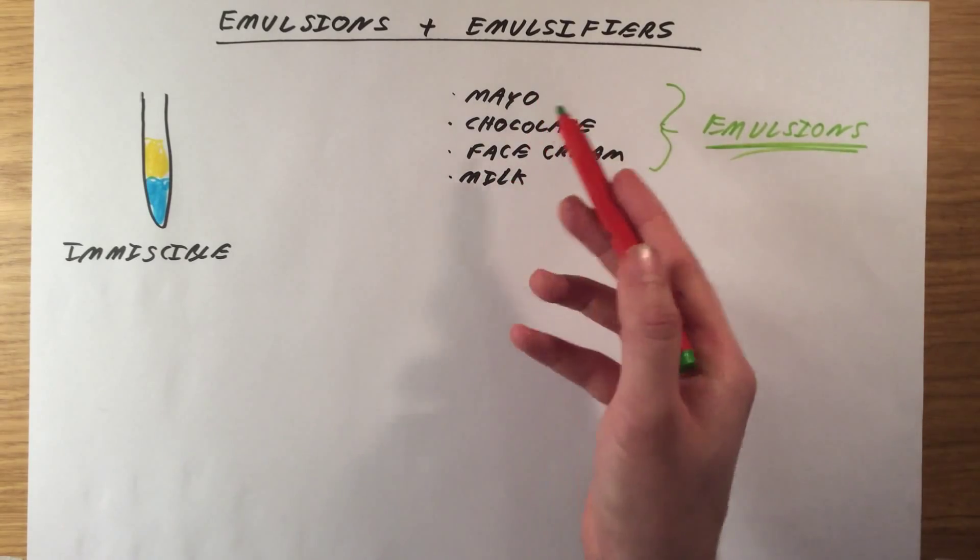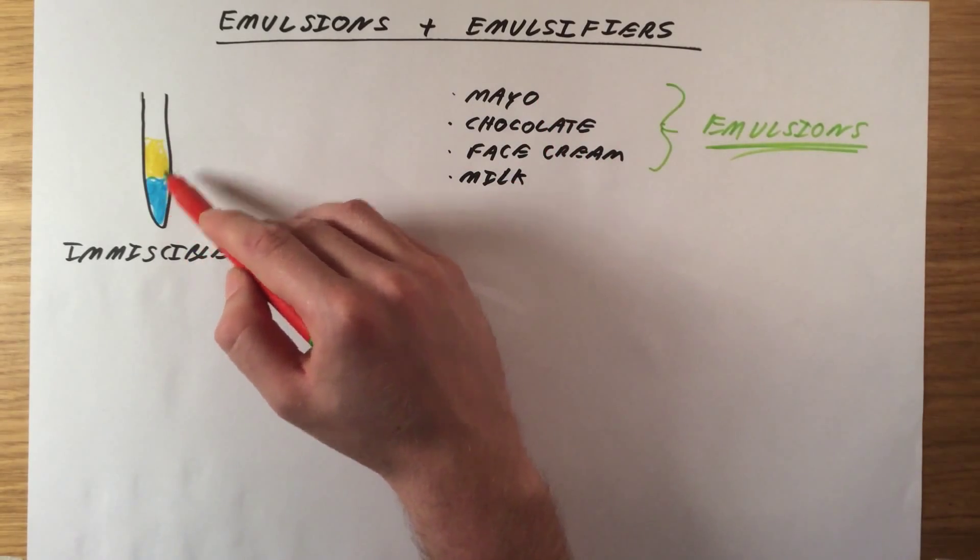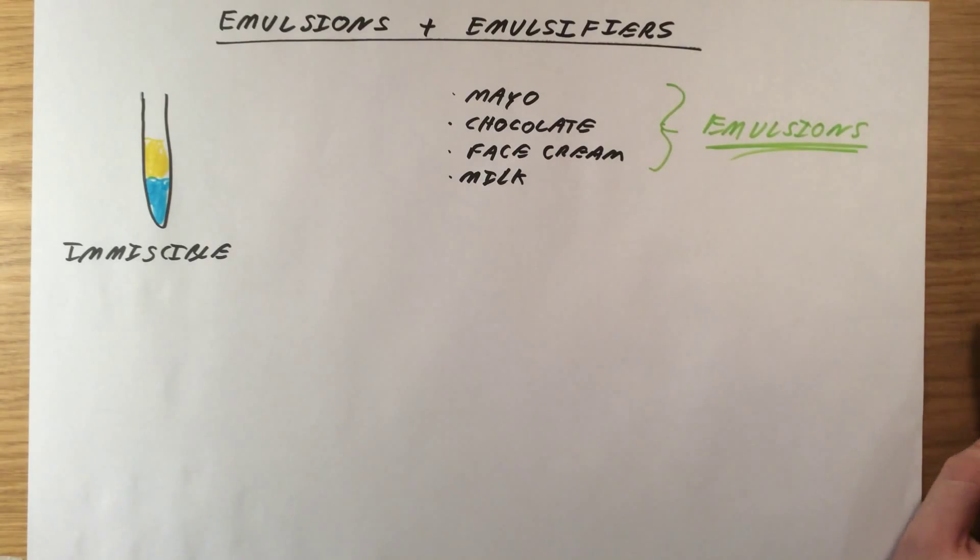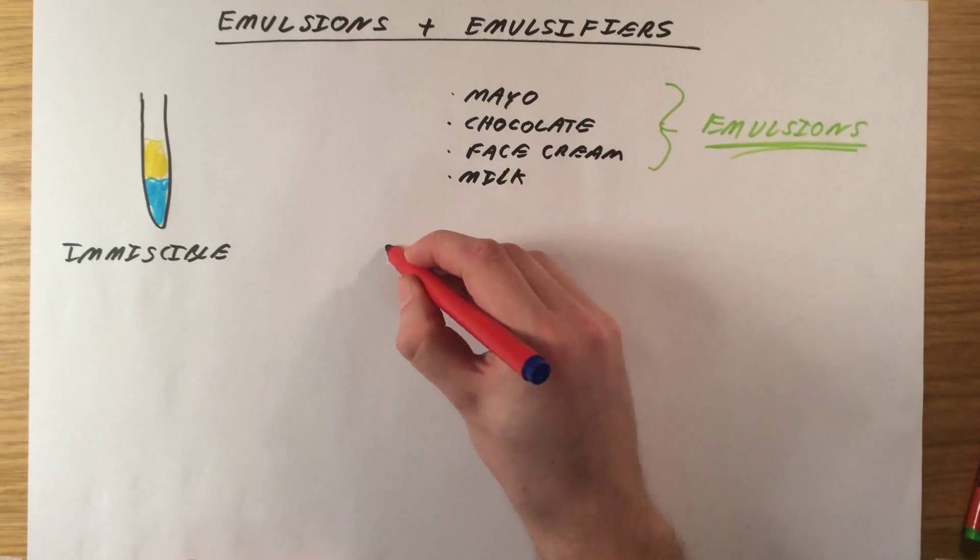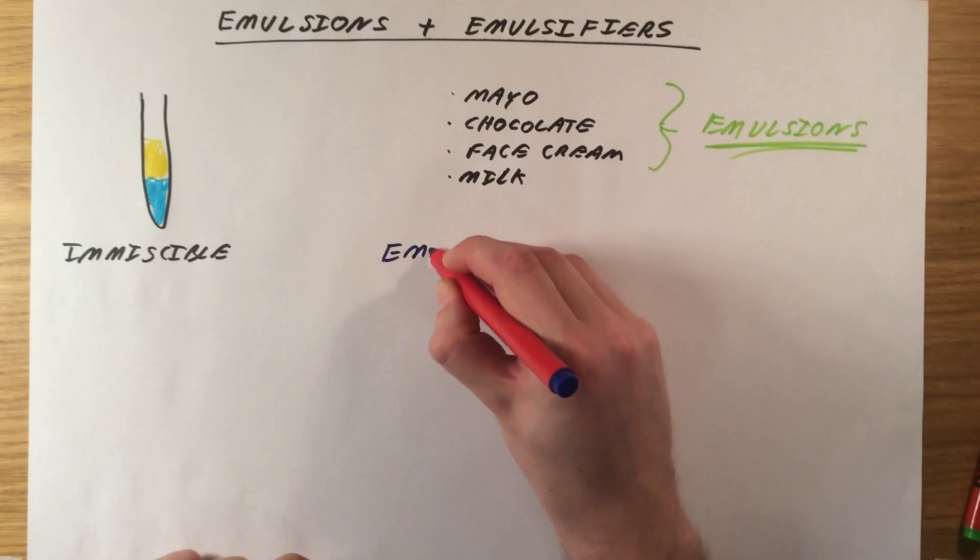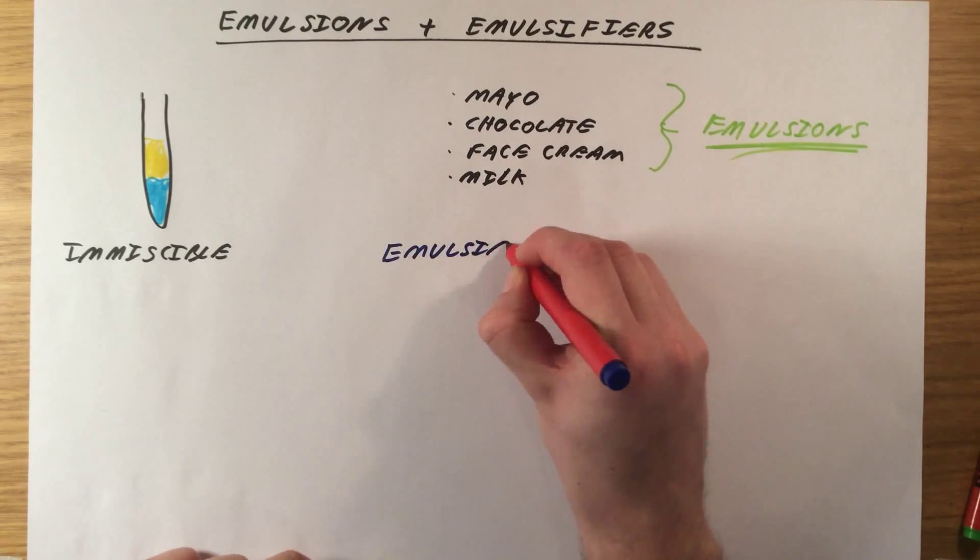Okay, so how do we actually do this? Because if you shake up oil and water, over time they would separate. What you actually need, what all of these things have in common, is they all contain something called an emulsifier.